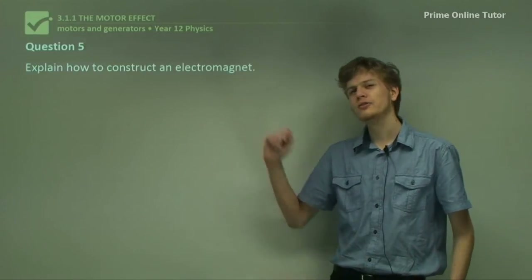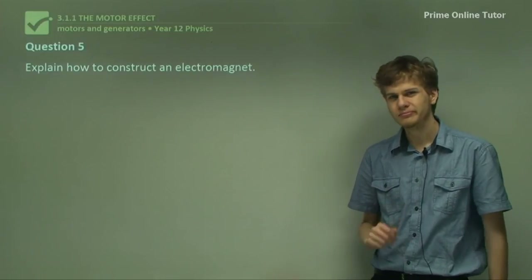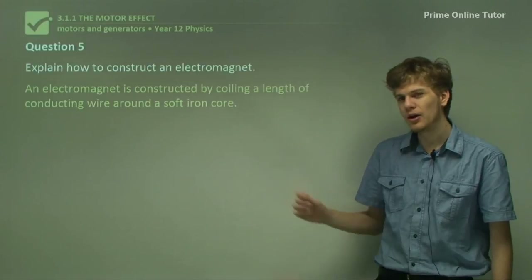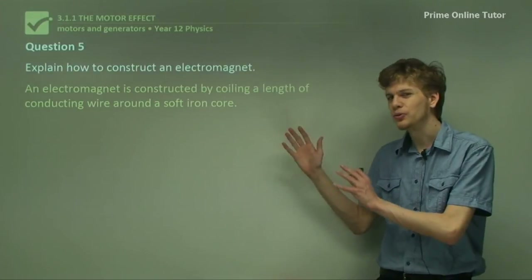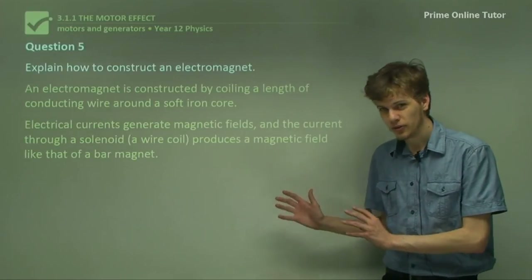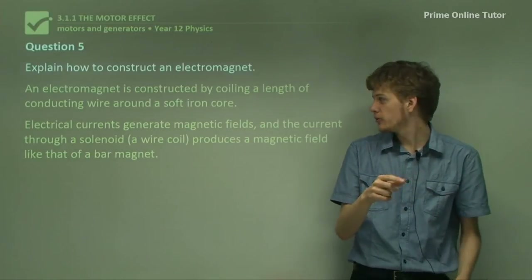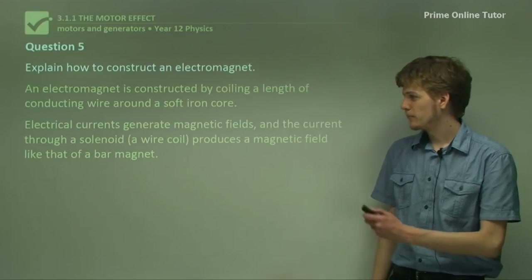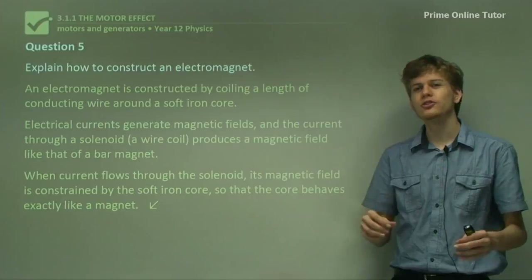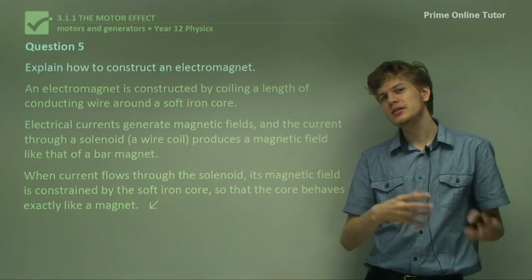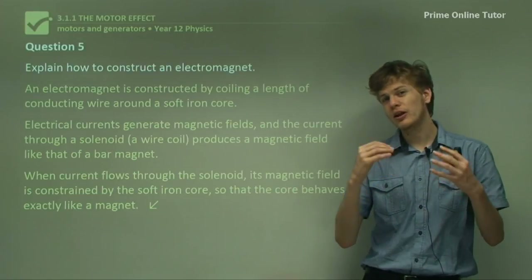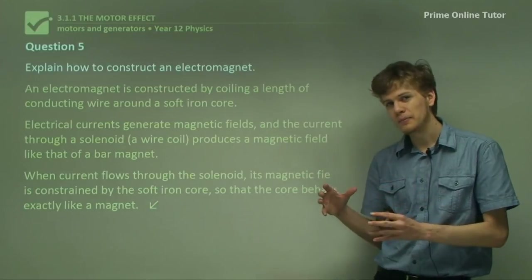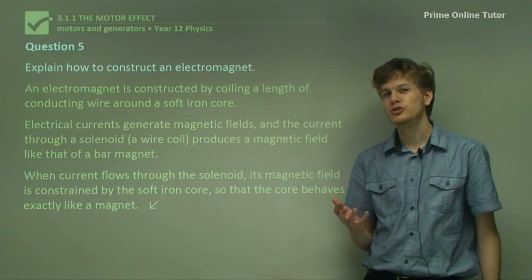Question 5: Explain how to construct an electromagnet. An electromagnet is constructed by coiling a length of conducting wire around a soft iron core. Electrical currents generate magnetic fields — a straight current-carrying conductor produces a circular magnetic field, but the current through a solenoid produces a magnetic field like that of a bar magnet. The purpose of the iron core is to constrain all the magnetic field lines within it, which actually increases the power of the electromagnet because the magnetic field lines prefer to be inside an iron core than in air. The core behaves exactly like a magnet because the magnetic field lines coming out of it are indistinguishable from those of a permanent bar magnet.